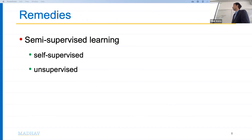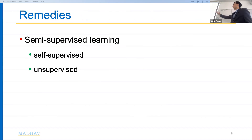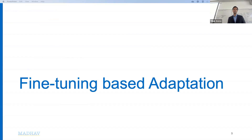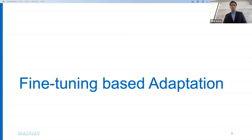One popular solution is semi-supervised learning, which uses unlabeled data to augment labeled data. There are also approaches like self-supervision and unsupervised learning. Another approach is model adaptation, where we train our model on lots of data and then adapt it to a target application with little data. Transfer learning is a common example.